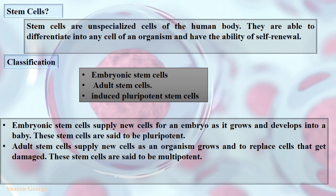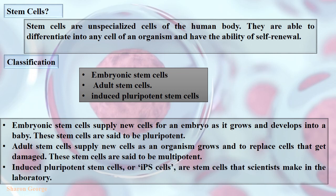Next is induced pluripotent stem cells. These are pluripotent stem cells, which means they can develop into any cell type. These kinds of cells are made in the laboratory — scientists take normal adult cells like skin or blood cells and reprogram them to become a stem cell.